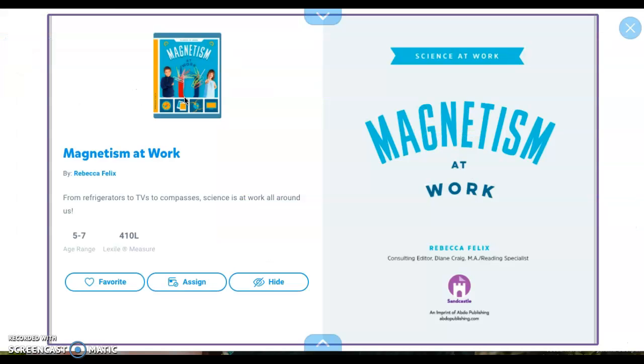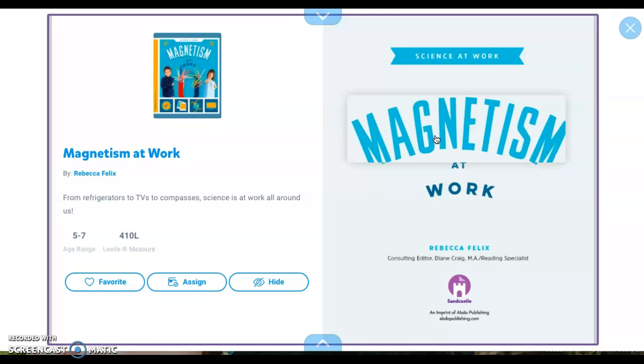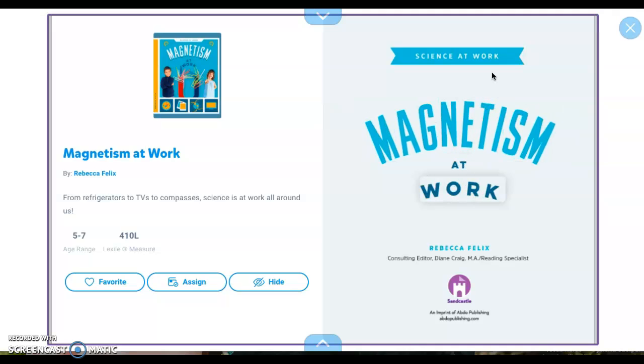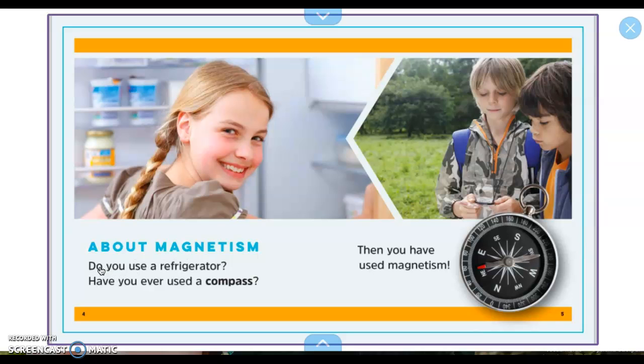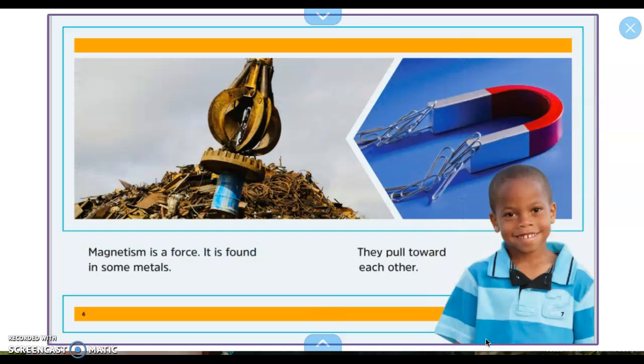About magnetism, do you use a refrigerator? Have you ever used a compass? Then you have used magnetism. Magnetism is a force. It is found in some metals. They pull toward each other, so even paperclips are attracted to the magnet.